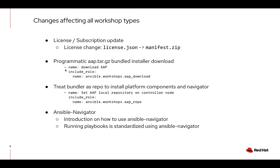The bundled installer is now behind a login window with access.redhat.com. It's really easy to get a login or a trial subscription. What we can do now is I've made a programmatic role that's part of the workshops collection — ansible.workshops.aapdownload — and you can get the bundled installer. We've also created an Ansible Workshops AAP repo role. This will turn that bundled installer into a repo on a specific node. We use the control node as we're setting up programmatic automatic changes to Automation Controller, which allows you to pin install Ansible Navigator or other tools to that bundled repo.